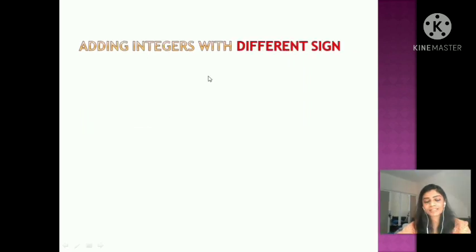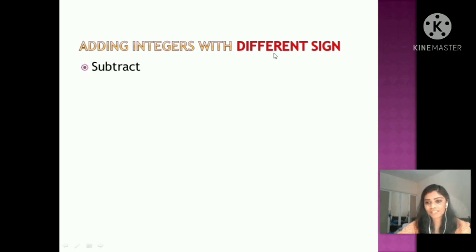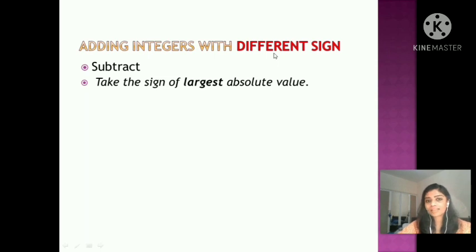Now let us discuss the second rule: adding integers with different sign. Recall the rule — step 1: subtract; step 2: take the sign of the largest absolute value.